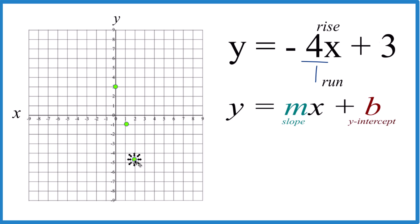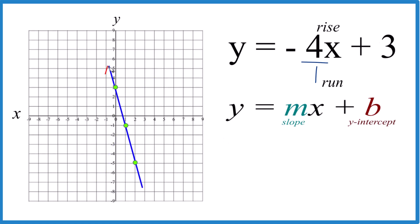And you can see there's the graph for y equals negative 4x plus 3. Let's put a line through that. Then we can put arrows here to show that it goes to infinity, and that is it.